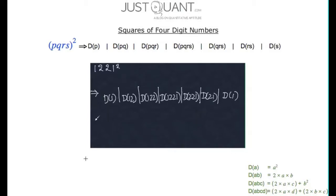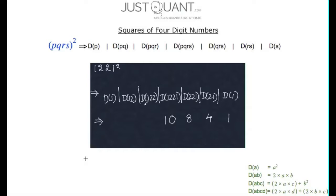We know that the duplex of 1 is 1 squared, or 1. Duplex of 21 is 2 times 2 multiplied by 1, which is 4. Duplex of 221 is 2 times 2 multiplied by 1 added to 2 squared, which is 8. Duplex of 1221 is 2 times 1 multiplied by 1 added to 2 times 2 multiplied by 2, which is 10. Duplex of 122 is 2 times 1 multiplied by 2 added to 2 squared, or 8. Duplex of 12 is 2 times 1 multiplied by 2, which is 4. And finally, duplex of 1 is 1.